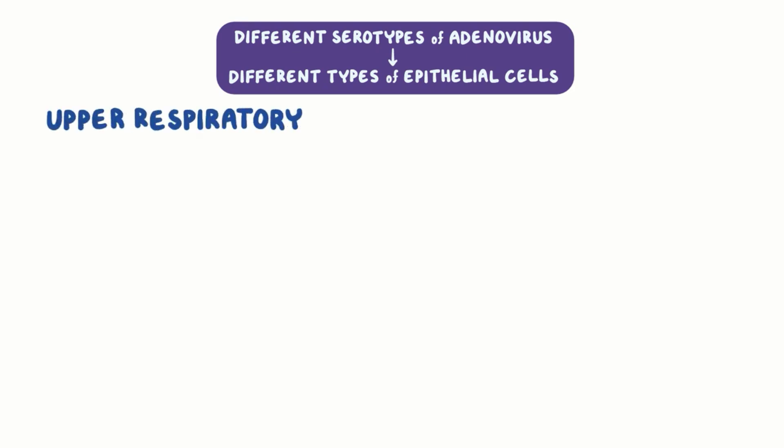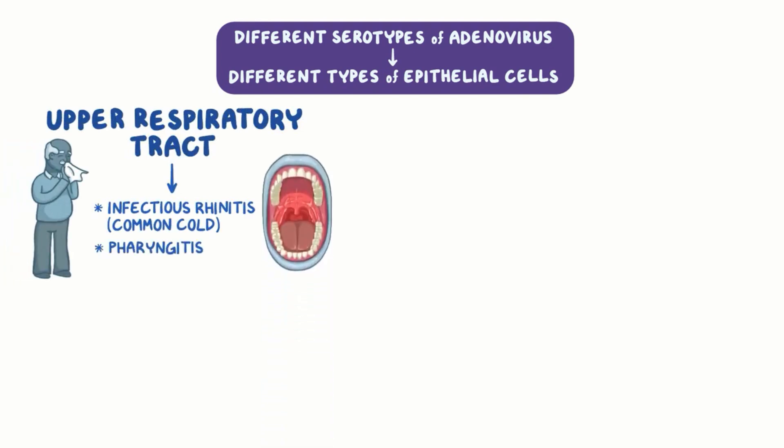Now different serotypes of adenovirus prefer different types of epithelial cells, so the impact of adenovirus infection on the body will vary. Some serotypes prefer the upper respiratory tract, causing infectious rhinitis, also known as the common cold, pharyngitis, which is the inflammation of the mucous membrane of the pharynx, or tonsillitis when the tonsils are inflamed.